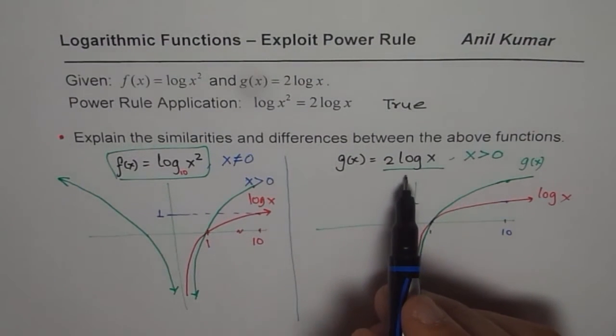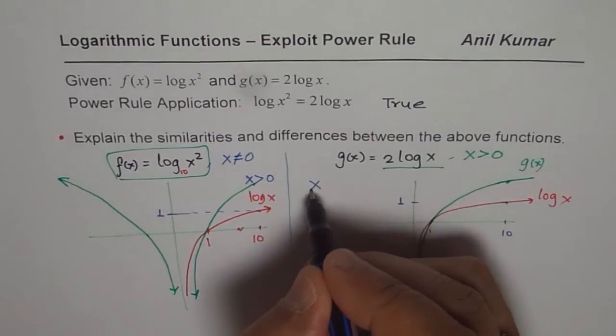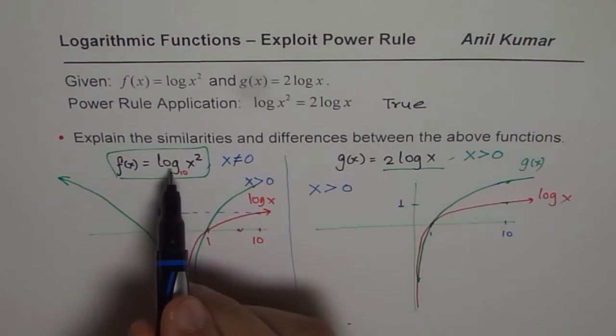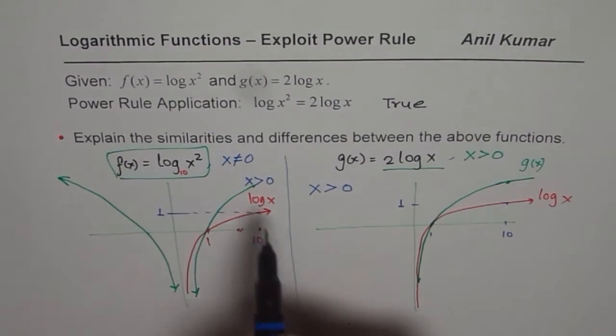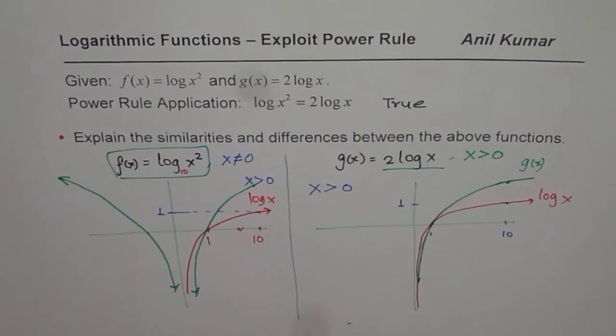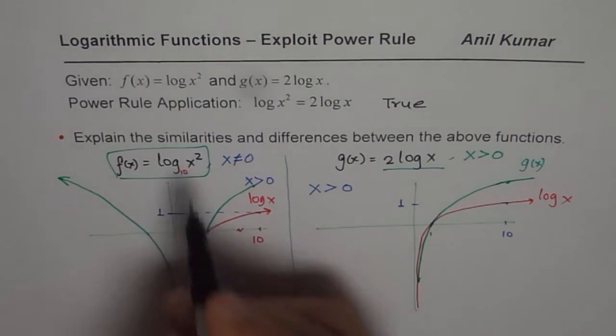So now from the given situation, you can write a lot of similarities and a lot of differences. Similarities are when we are considering the domain x greater than 0. But if otherwise, this function has only one restriction. That is, x is not equal to 0.